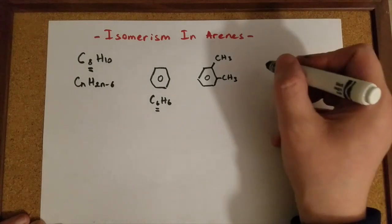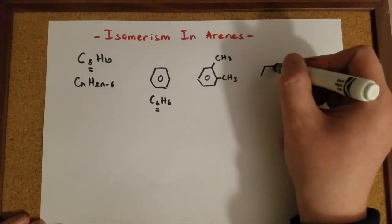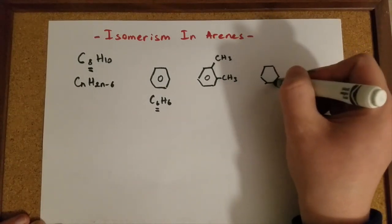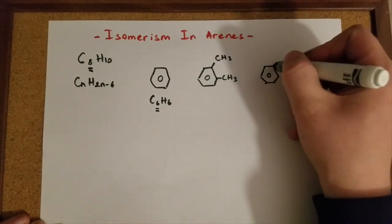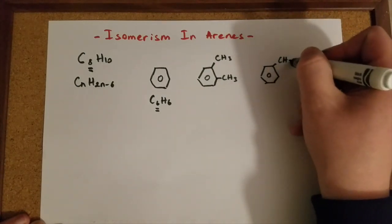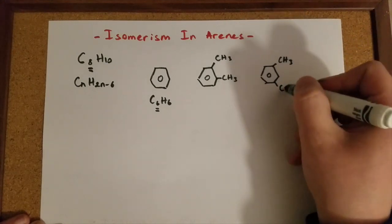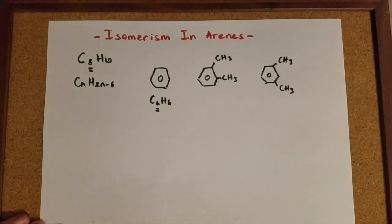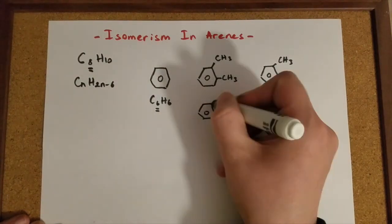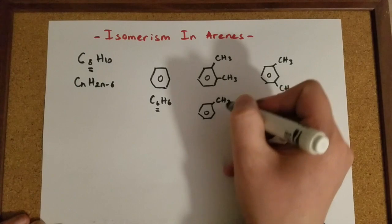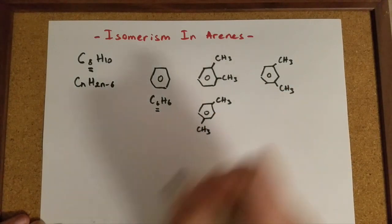We can make different isomers simply by changing the location of the methyl groups. So I'm keeping this here, CH3. And I can have the second methyl group in here. Another possibility is keeping this one here and changing the location of the second one here.